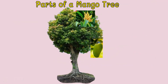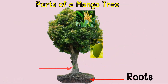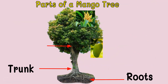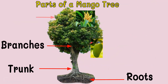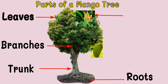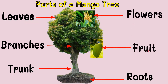Now let's go to the parts of a mango tree. This part is the roots. This one — that's the trunk. This is what we call the trunk; it's a big stem of a tree. How about this? Branches. And the green part? Leaves. How about this? Flowers. This one? Fruit. Let's name the part of the mango tree once more: roots, trunk, branches, leaves, flowers, and fruit.